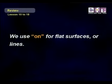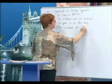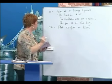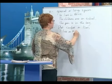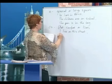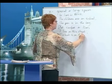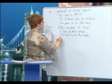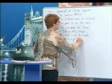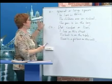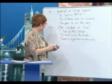Now, with on — remember, on is for flat surfaces or lines, like a street or a road. This is a flat surface. So: I live on this street. The book is on the table. And there is a picture on the wall. So these are flat surfaces or lines.